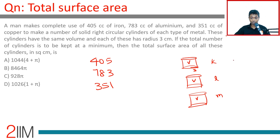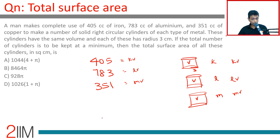The total volume of all iron cylinders is k·v, aluminium is l·v, and copper is m·v. So k·v = 405, l·v = 783, and m·v = 351. This means v, the volume of each cylinder, must be a factor of 405, 783, and 351. To keep the total number of cylinders at a minimum, v should be as large as possible — meaning v is the HCF of 405, 783, and 351.